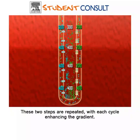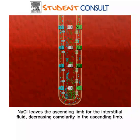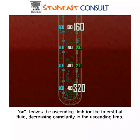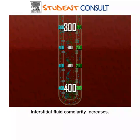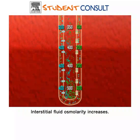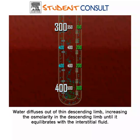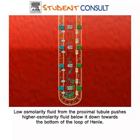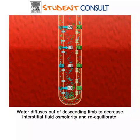These two steps are repeated with each cycle enhancing the gradient. Sodium leaves the ascending limb for the interstitial fluid, decreasing osmolarity in the ascending limb. The interstitial fluid osmolarity increases. Water diffuses out of the thin descending limb, increasing the osmolarity in the descending limb until it equilibrates with the interstitial fluid. Low osmolarity fluid from the proximal tubule pushes the fluid below it down the loop of Henle. Water leaves the descending limb to decrease interstitial fluid osmolarity and re-equilibrate.